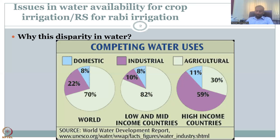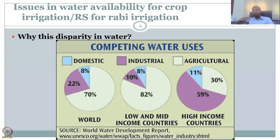However, in low and middle income countries, they have compromised industrial development and put more water into agriculture — around 82%. When you go to developed or high-income nations, the picture flips. Industry takes the huge chunk at 59%, very little for agriculture, and 11% for domestic use, including high-quality lifestyles with swimming pools, car washing, and large lawns.